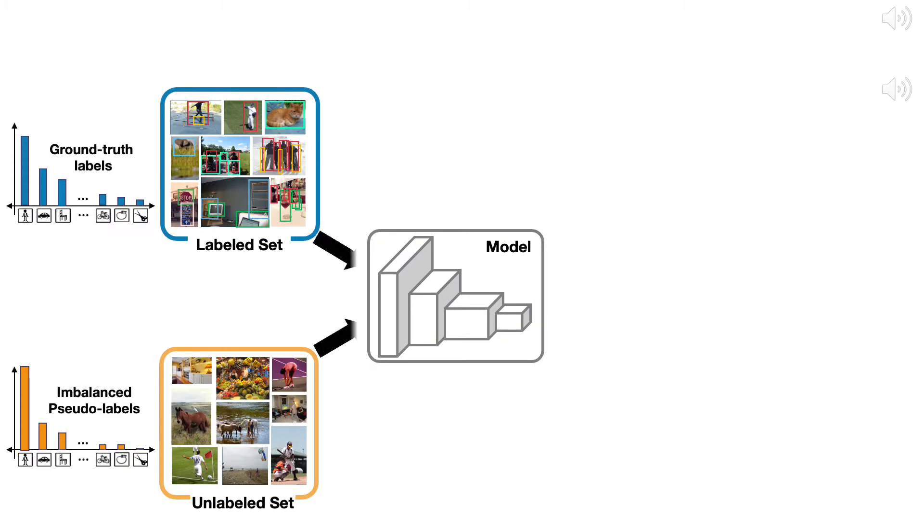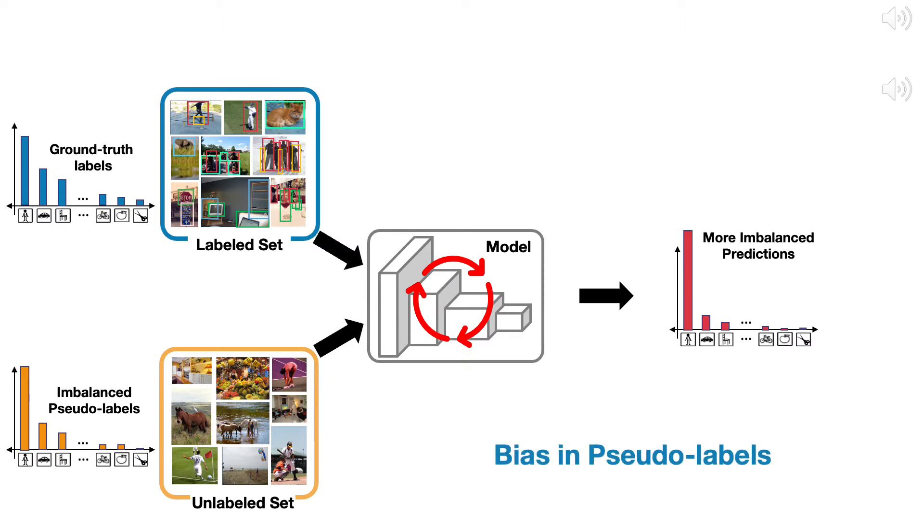As a result, adding biased pseudo-labels into the semi-supervised training makes the class imbalance issue more severe. This is the pseudo-labeling bias issue, which is not addressed in existing works.